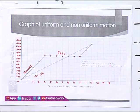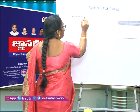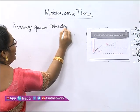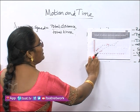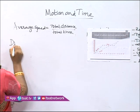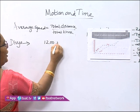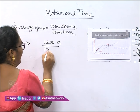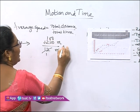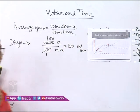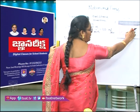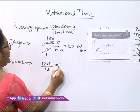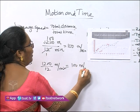Divya's motion is uniform motion and Monica's motion is non-uniform motion. Now let us calculate the average speed of both. Average speed equals total distance covered divided by total time taken. Divya's total distance is 1200 meters in 12 minutes, so her average speed is 100 meters per minute. Monica also covered 1200 meters in 12 minutes, so her average speed is also 100 meters per minute.